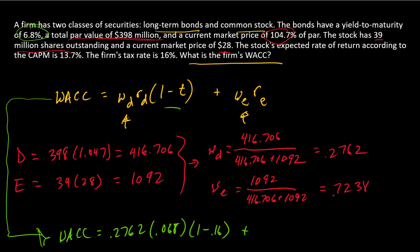And then we'll deal with the equity component. So the equity component is the weight of equity, 0.7238, times our estimate of the cost of equity. And so here we're going to have an estimate that's coming from the CAPM, 13.7%. And our estimate of the WACC is 0.1149.